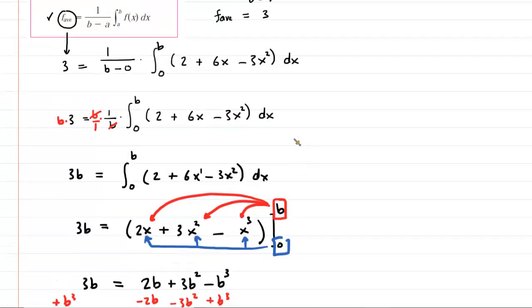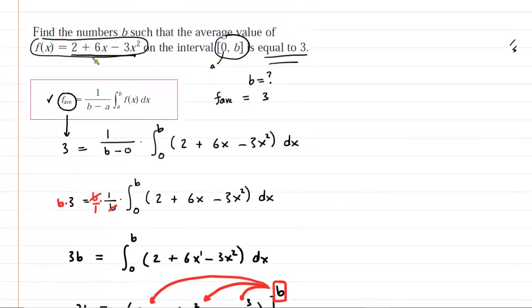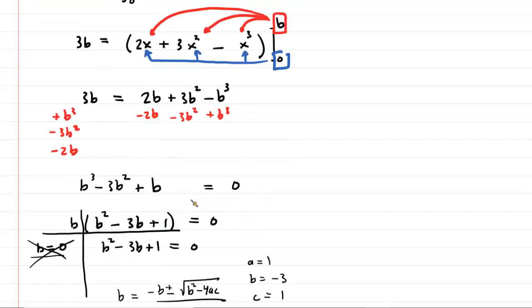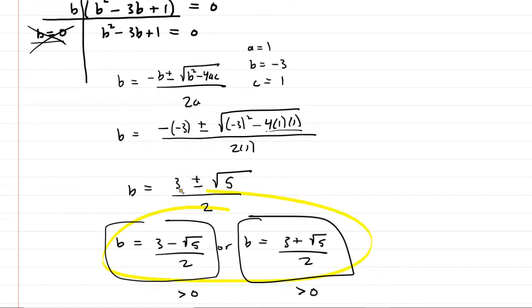And therefore, we will keep them both. Because remember, the question even implied that there were two answers in a way because it says find the numbers b. And so we'll also notice that the b has to be something greater than 0 because that would be an upper limit, a number that would be greater than the lower limit. The lower limit is 0. So our upper limit has to be larger than that. So again, both of these are greater than 0. They are both the correct answer.